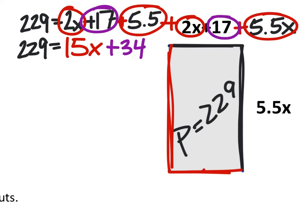That's a much smaller equation, something hopefully that is a little bit easier to work with. And to solve for x, we'll just subtract 34 from both sides.